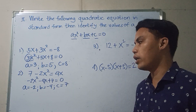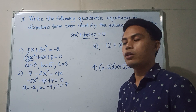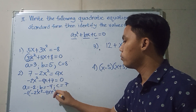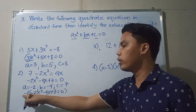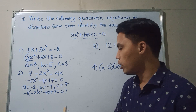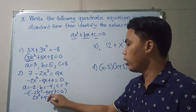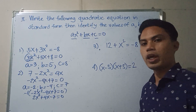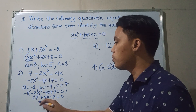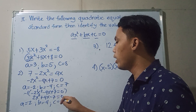Question: can the value of A be negative? Yes, it can. But in this case, we can make A positive by multiplying the whole equation by negative 1. So negative 1 times the quantity negative 2x squared minus 4x plus 7 equals 0 gives us 2x squared plus 4x minus 7 equals 0. The signs of all terms change, so A becomes positive 2, B becomes positive 4, and C becomes negative 7.